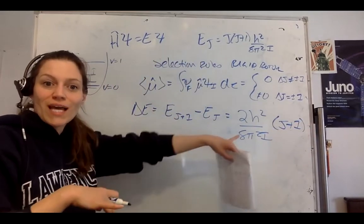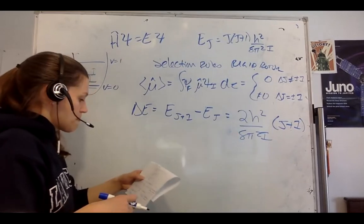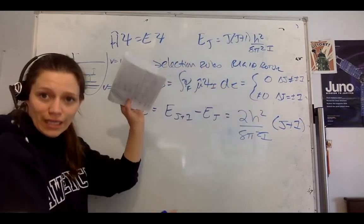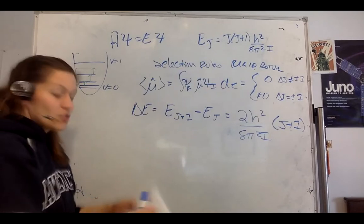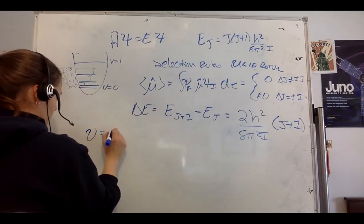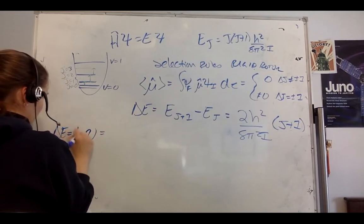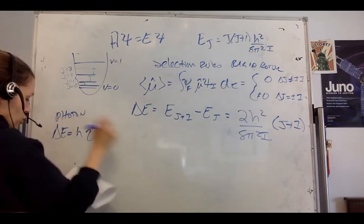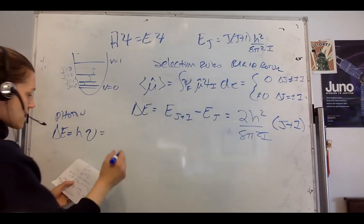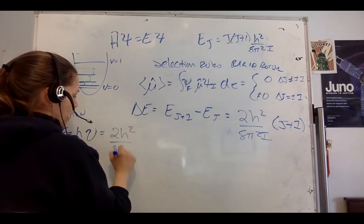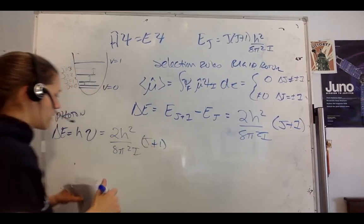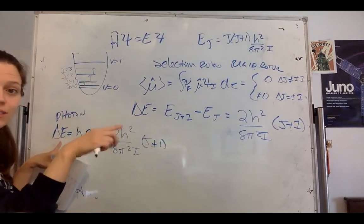This is going to be the energy absorbed or emitted upon increase of rotation. Now, let me introduce how we use this. Our frequency: ΔE equals h·ν, so this is from our photon. We're going to transfer that into this energy. That's going to equal 2ℏ²/8π²I(j+1), because this ΔE of our photon is equal to ΔE of our transition.